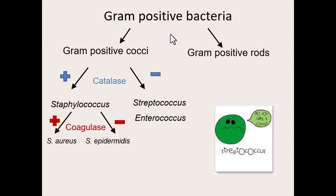How we know that catalase is being produced is we add some hydrogen peroxide. If catalase is present, this enzyme takes hydrogen peroxide — H₂O₂ — and breaks it down into water and oxygen. That oxygen is a gas, and because we now have this oxygen gas being produced, we visually see it as bubbles. Have you ever put hydrogen peroxide on a wound and did it bubble?